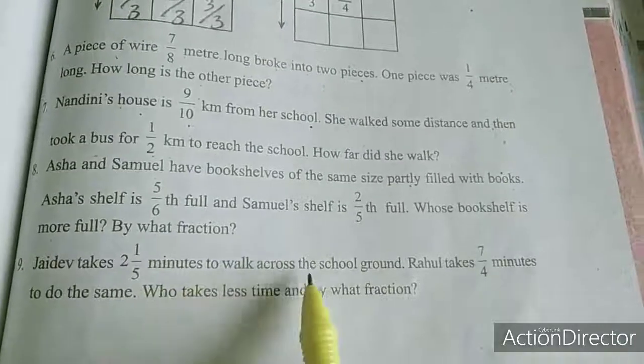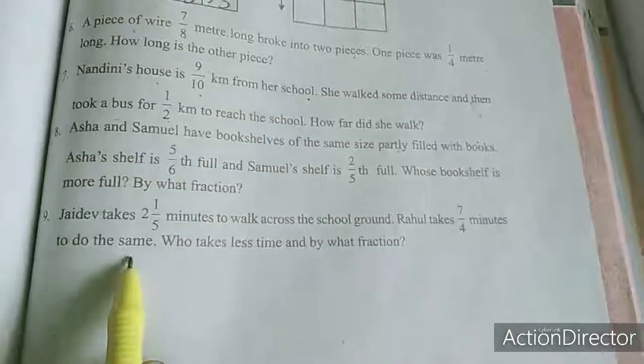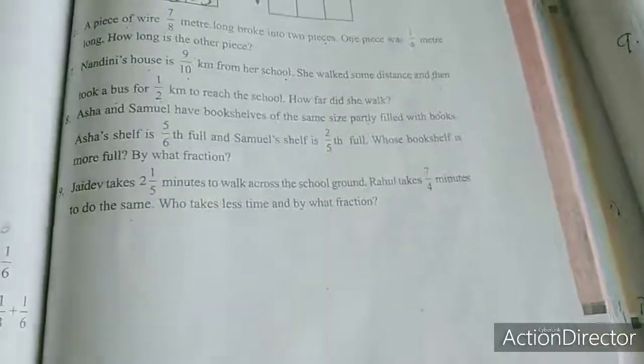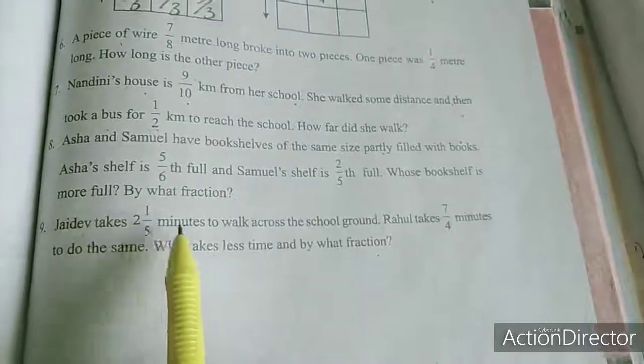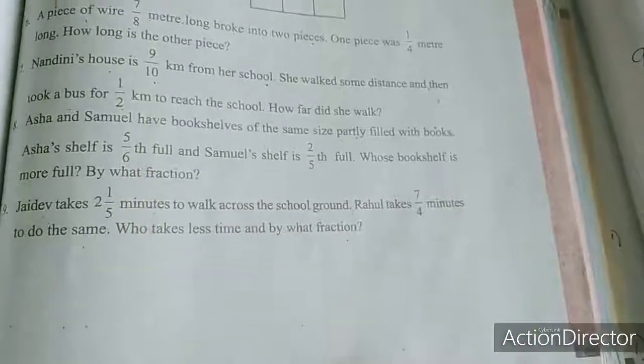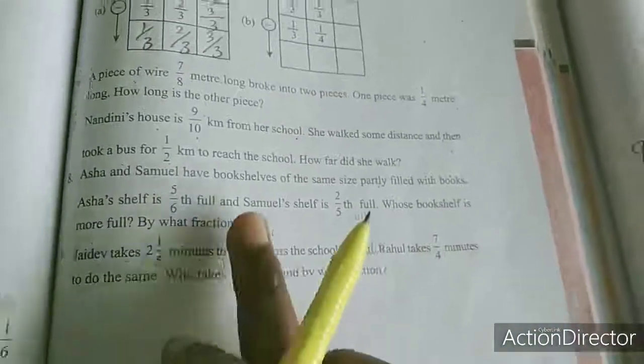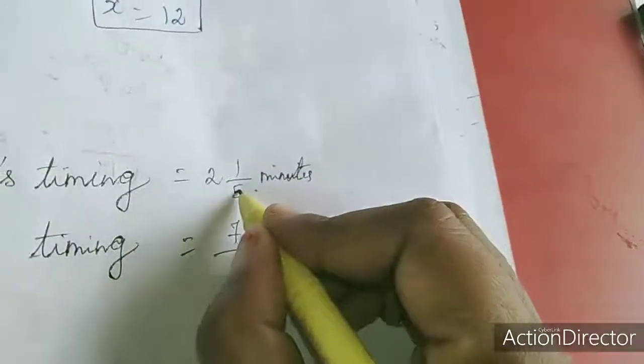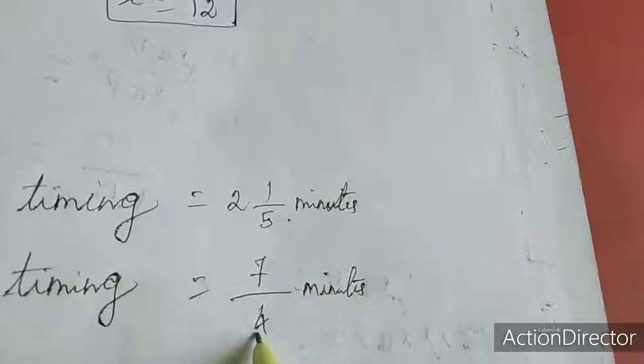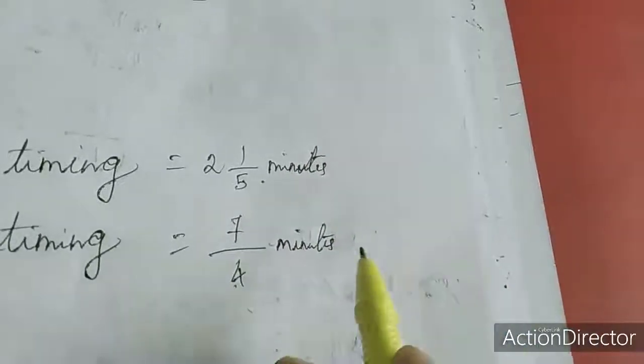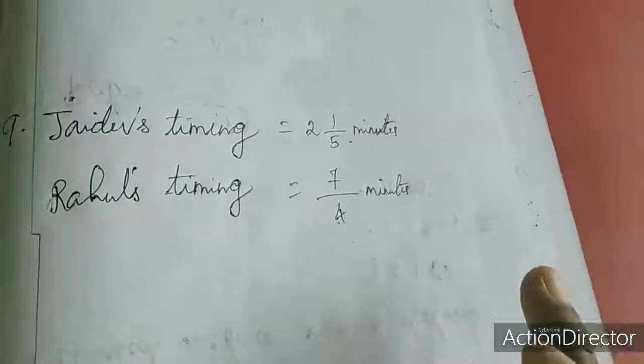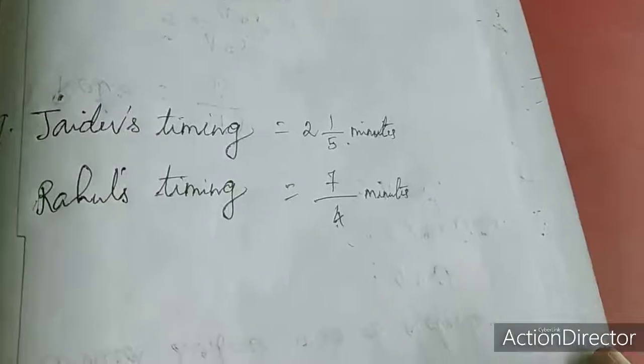Now we will move to ninth sum. Jaydev takes 2 and 1 by 5 minutes to walk across the school ground. Rahul takes 7 by 4 minutes to do the same. Who takes less time and by what fraction? See here, first you have to change this mixing fraction as an improper fraction and then equalize the denominator, then find out who takes less time and by what fraction. This is the homework for you. Up to this, the 7.6 exercise is completed as well as 7th chapter also completed. Thank you, complete the homework.